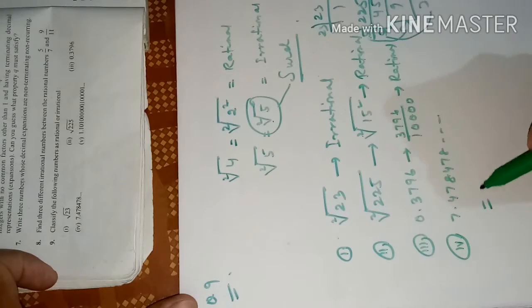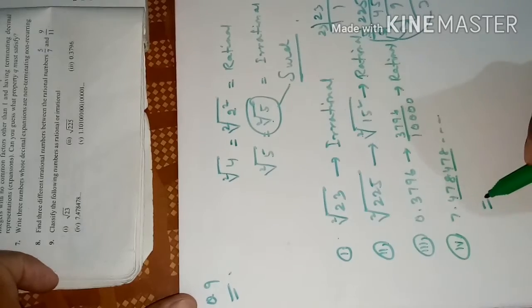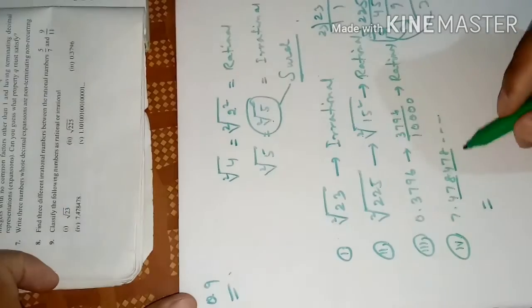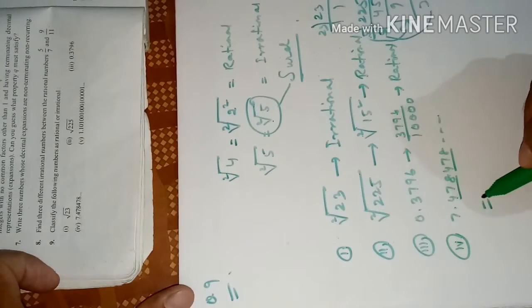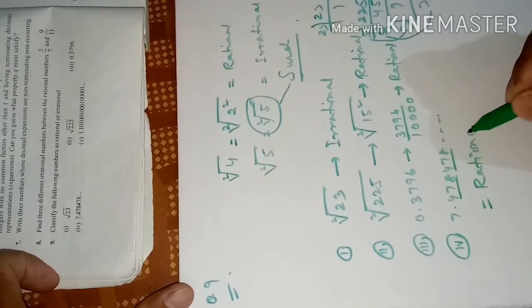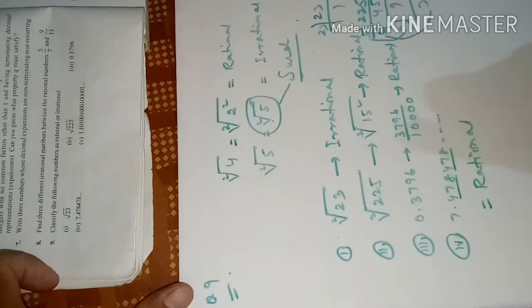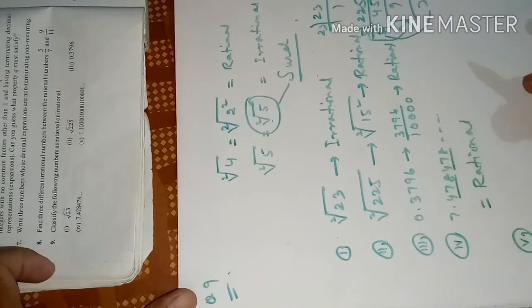Fourth number: 7.478478... After the decimal point, 478 is repeated — 3 digits repeated. It is non-terminating but it is repeating. So we call it a rational number.